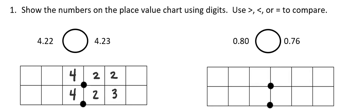So now I will move to the hundredths place. In the first number, I have a 2 in the hundredths place. In the second number, I have a 3 in the hundredths place. That means I have more hundredths in my second number than in the first number, and that makes the second number the larger of the two. So I would say that 4 and 22 hundredths is less than 4 and 23 hundredths. That arrow pointing to the left is the less than symbol.